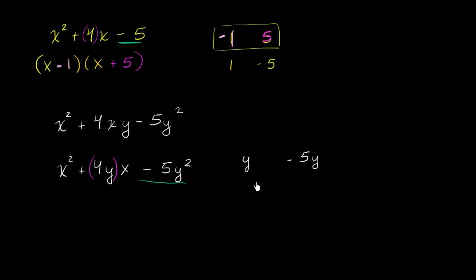Let's see if we swap the signs: -y and positive 5y. The product of -y and 5y is -5y², and the sum of -y and 5y is positive 4y. So we know how to factor it now.